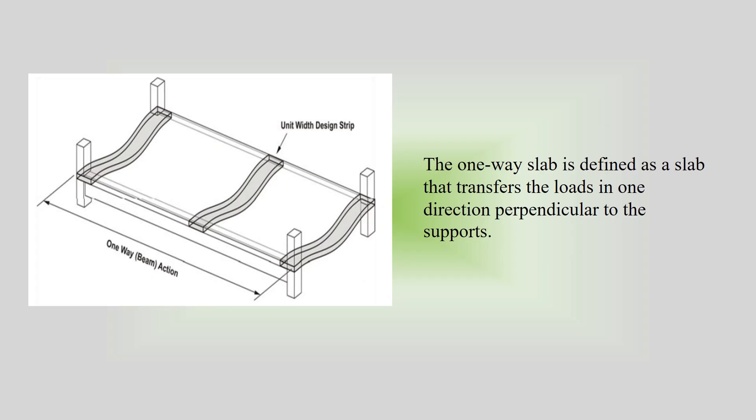The one-way slab is defined as a slab that transfers the loads in one direction perpendicular to the supports. According to the structural code, any slab with an aspect ratio of length to width greater than two can be treated as a one-way slab.